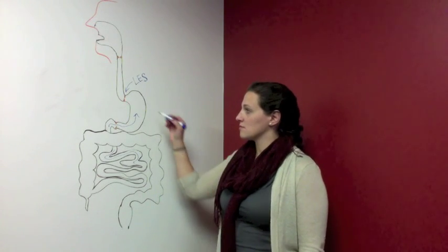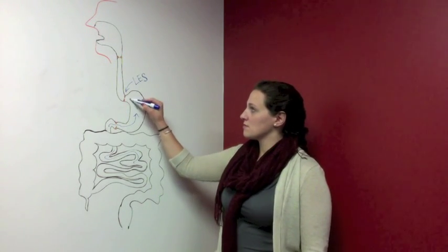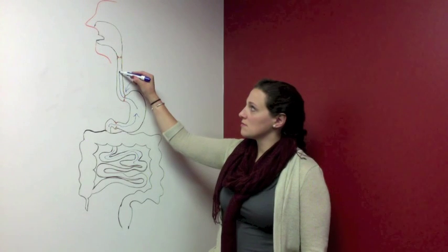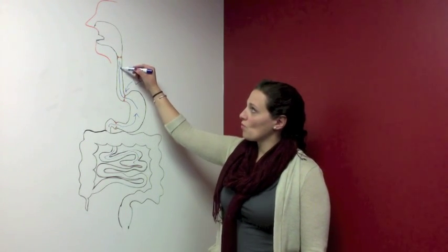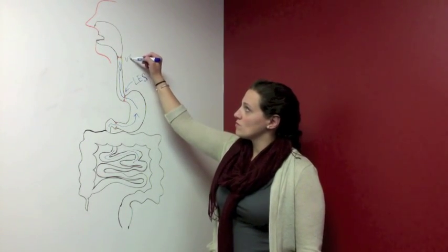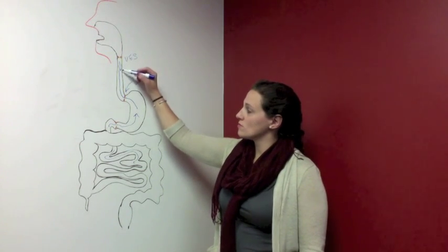Next, if the upper esophageal sphincter, the UES, remains closed, retching occurs. In retching, the bolus returns to the stomach through the patent LES.